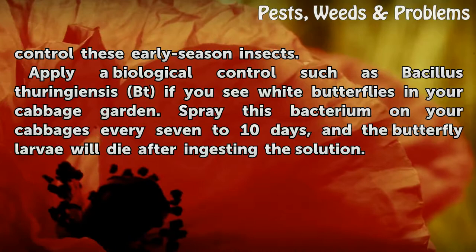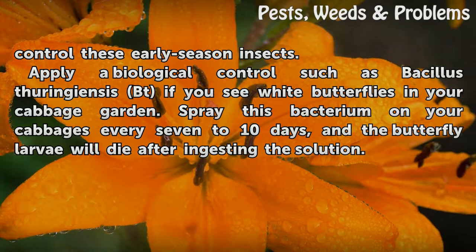Apply a biological control such as Bacillus thuringiensis (Bt) if you see white butterflies in your cabbage garden. Spray this bacterium on your cabbages every 7 to 10 days, and the butterfly larvae will die after ingesting the solution.